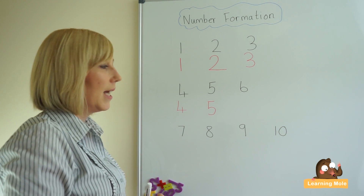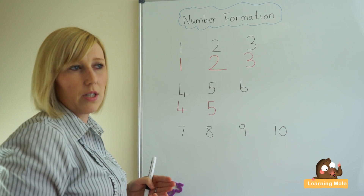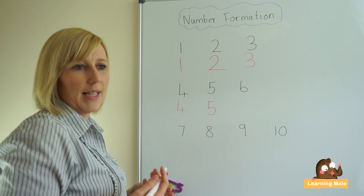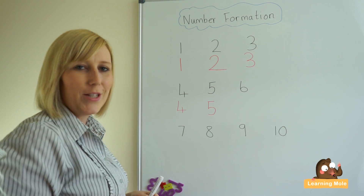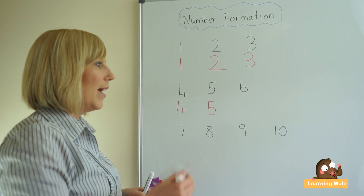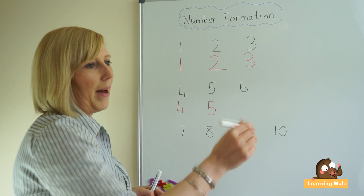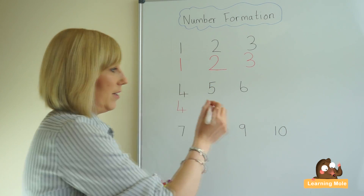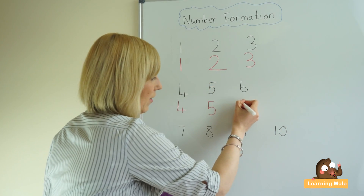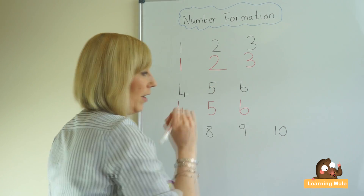Number six — not so difficult, but we do like to give them a little story just to remember. I always say down on a roller coaster and back round. Down on the roller coaster and back round.